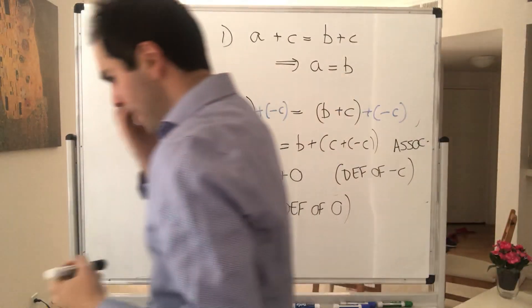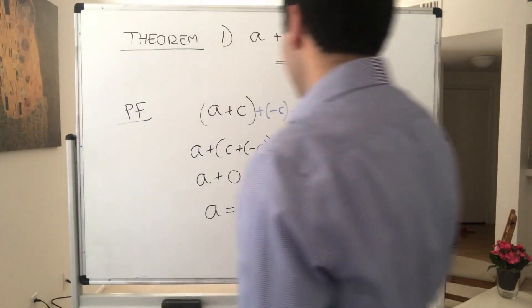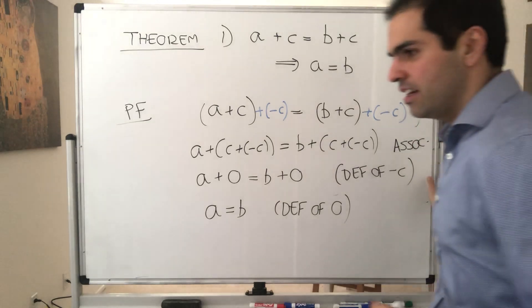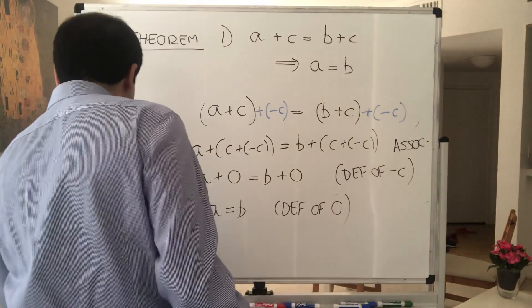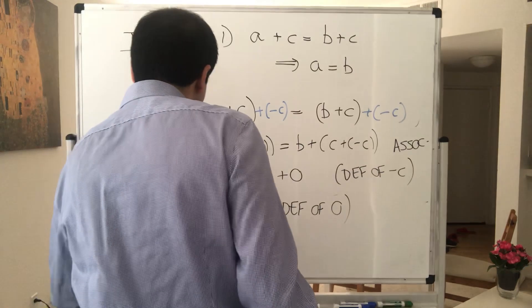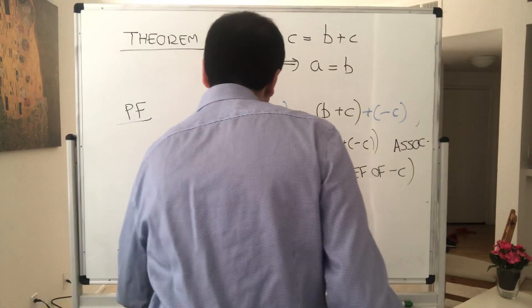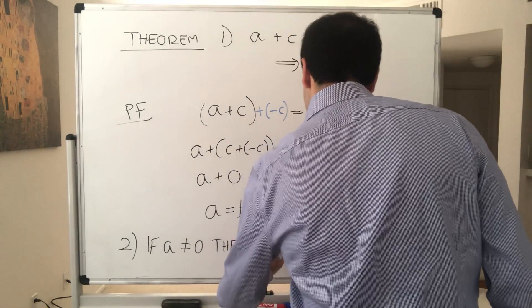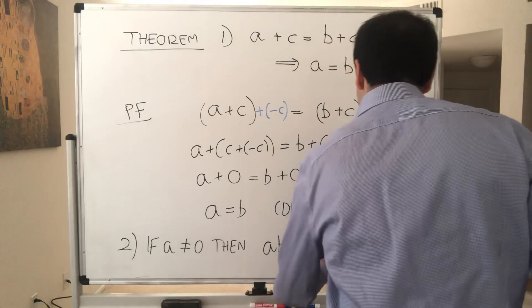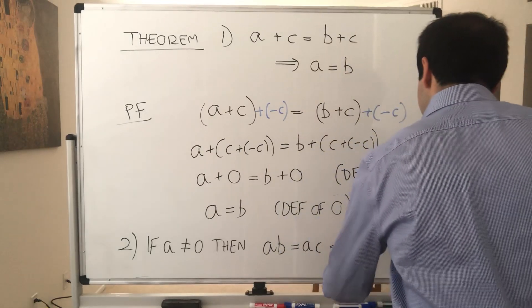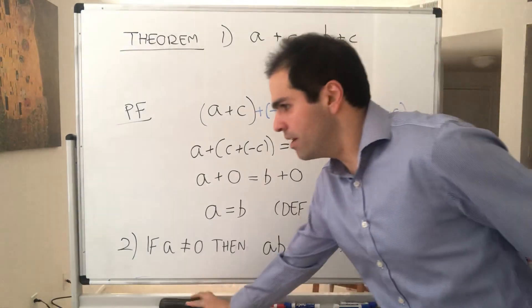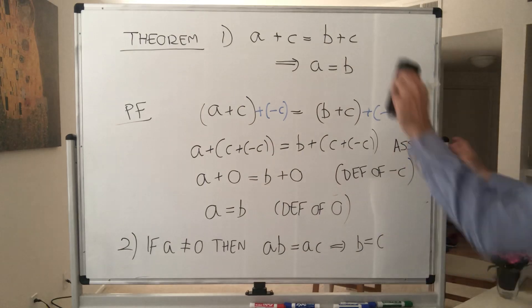Very good. And then, similarly, we can get another cancellation law, namely the multiplicative cancellation law. Namely, if a is not equal to zero, then, in other words, ab equals ac implies b equals c. And similarly, you just multiply by a inverse.